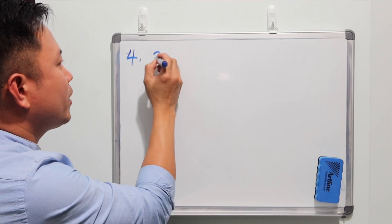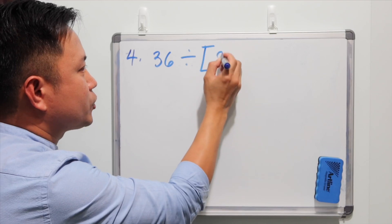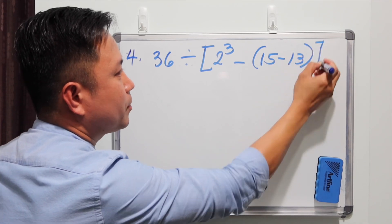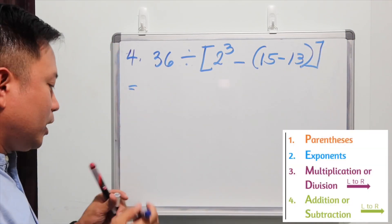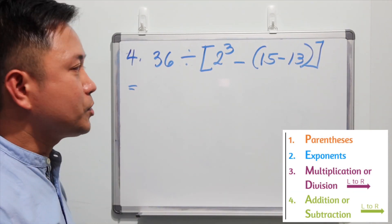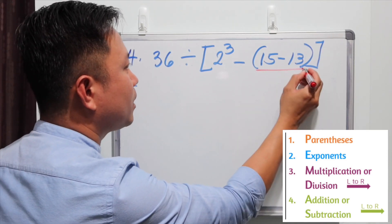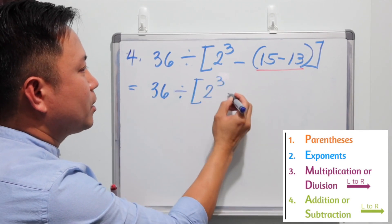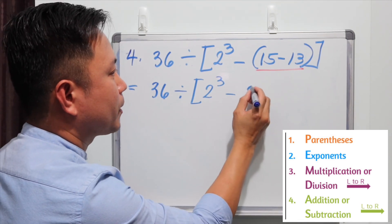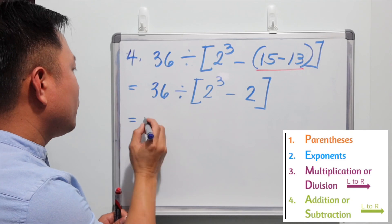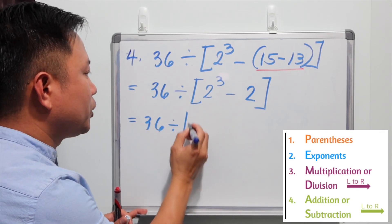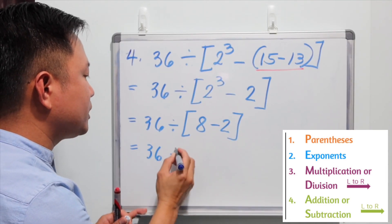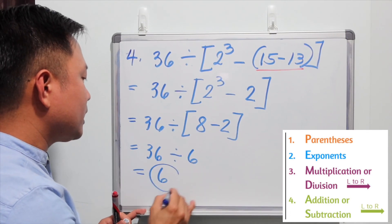Example four: 36 divided by bracket 2 to the third minus parentheses 15 minus 13, close parentheses, close bracket. We simplify the bracket, and inside it we also have parentheses to simplify first: 15 minus 13 is 2. So we have 2 to the third minus 2. 2 to the third power is 8, and 8 minus 2 is 6. So we have 36 divided by 6, which gives us 6 as the final answer.